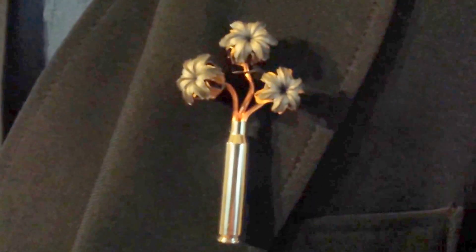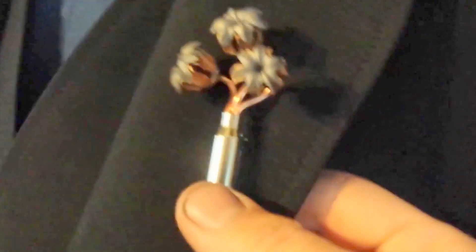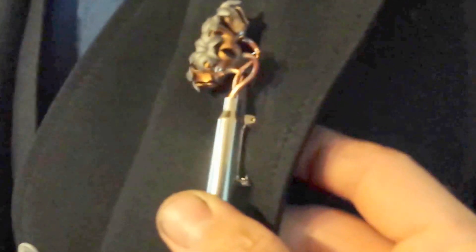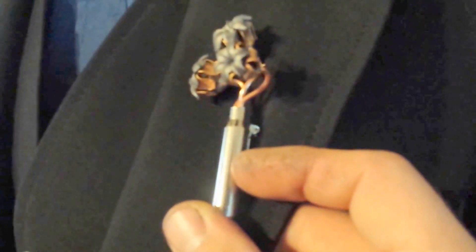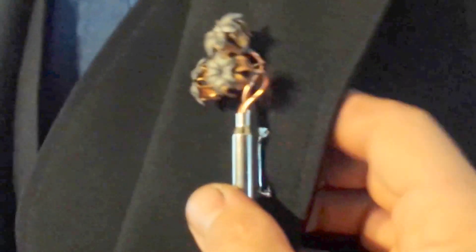So here we have a three bloom boutonniere and it's already attached, but you can see you use the bar pin to go through the jacket. And then up above that, this is the safety pin that comes with the boutonniere.